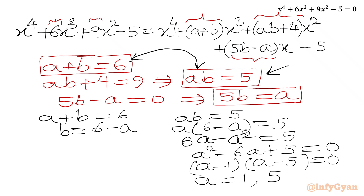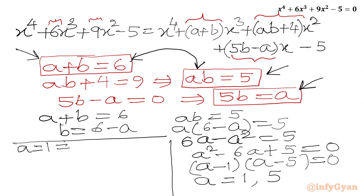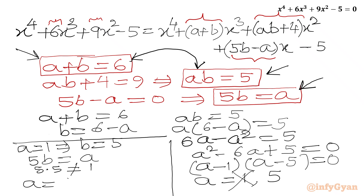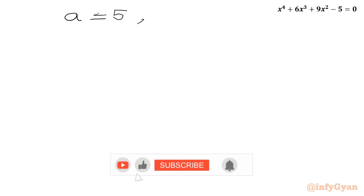Let us verify through our third equation. If a = 1, then b = 5. Checking 5b = a: 5 times 5 is 25, which is not equal to 1 — so this combination is cancelled out. We accept a = 5. If a = 5, then b = 1. Checking: 5 times 1 = 5, which equals a = 5. So a = 5 and b = 1 are our accepted values.